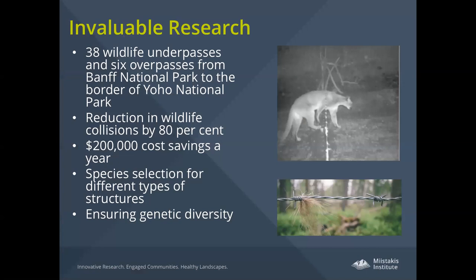Through studying wildlife overpass and underpass use, researchers have been able to demonstrate mortality rates that are 50 to 100% lower along certain sections of highway where these structures exist. In some sections, mortality rates for elk have gone down to zero compared to over a hundred elk-vehicle collisions per year in the mid-nineties. Dr. Tony Clevenger has led much of this research, demonstrating the diversity of species that have used these structures over 200,000 times, and showing how important they are for reducing fragmentation and ensuring genetic diversity.